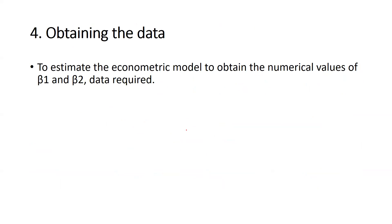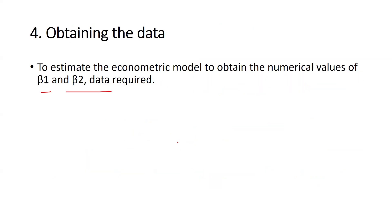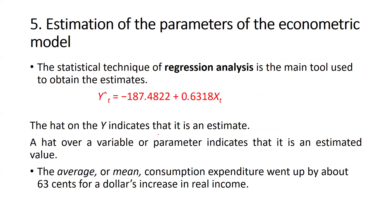The fourth step is obtaining the data. To estimate the econometric model and obtain numerical values of β₁ and β₂, data is required. In our example, Y is consumer expenditure and X is income, so we need numerical values for both these columns — not alphabetical labels, but actual numerical data.